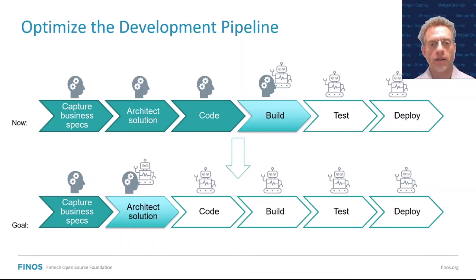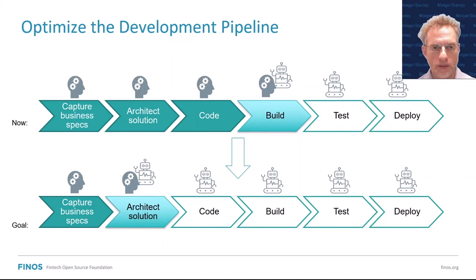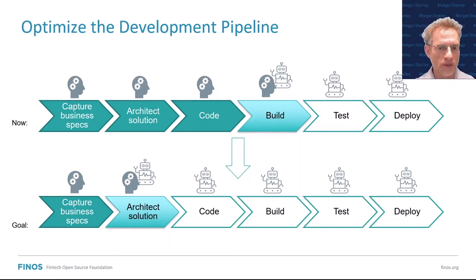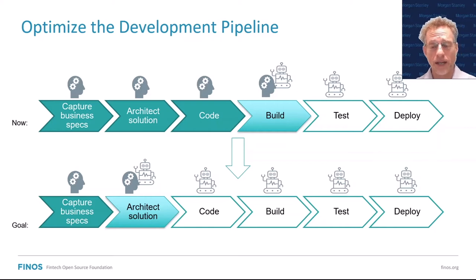What does that look like in the bigger scheme of software development? Right now you probably have a flow where you work with the business to come up with specifications, architect a solution, then code up the business logic, and then do the regular build-test-deploy cycle. The first three steps are very manual in the current flow. What we want to do is minimize as much manual effort as possible — get the business specs together, which should be the only manual process, and then automate everything else after that.